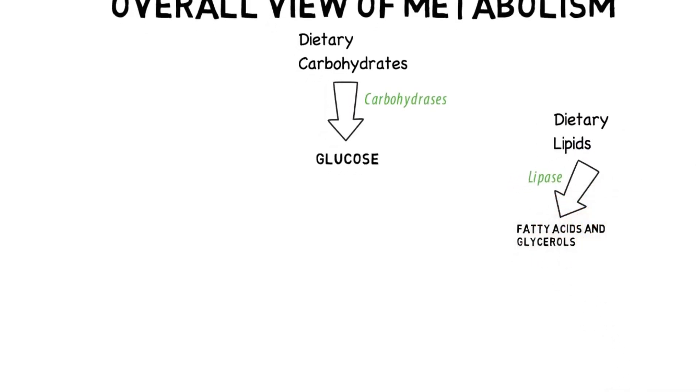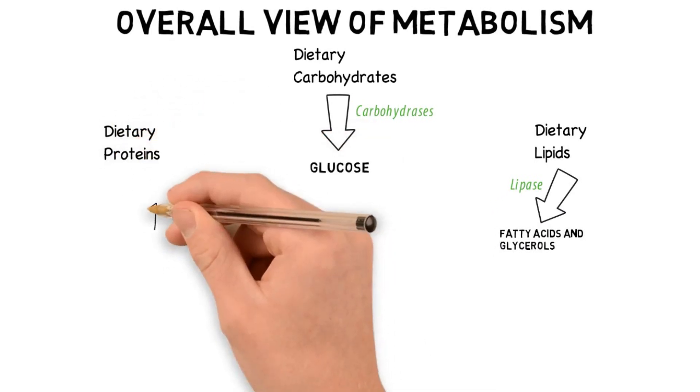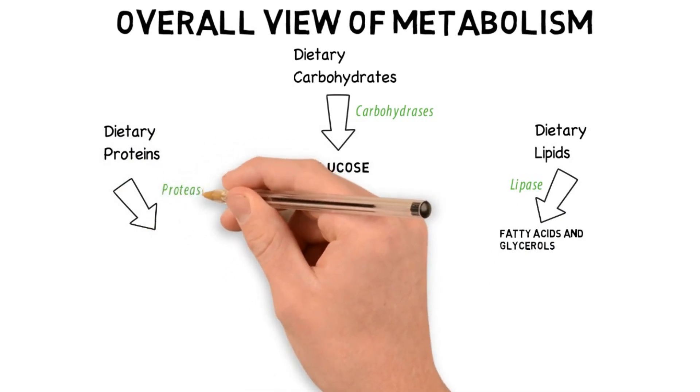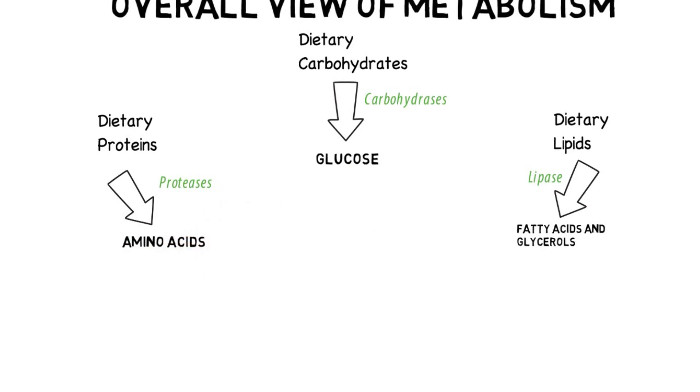Similarly, the proteins, they too undergo catabolism in the GI tract by proteases to form amino acids. Now, these three end products catabolize to form a common intermediate known as acetyl coenzyme A.